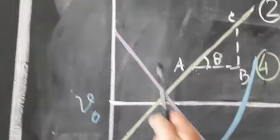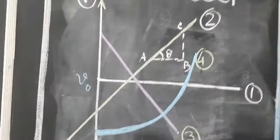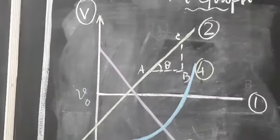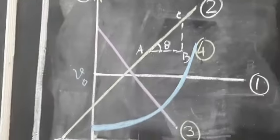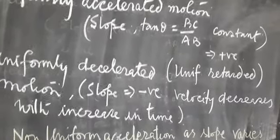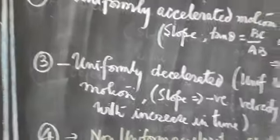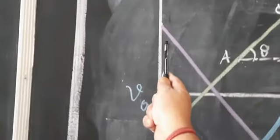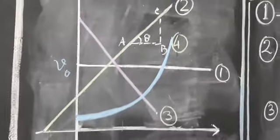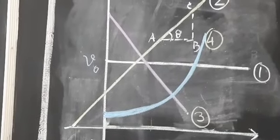Now look at the third graph — the violet color graph. Here, the velocity is decreasing uniformly. So this is uniformly decelerated or uniformly retarded motion. The third graph represents uniformly retarded motion because the slope is negative — velocity decreases with an increase in time. This negative acceleration is retardation, so the third graph indicates uniformly decelerated or uniformly retarded motion.